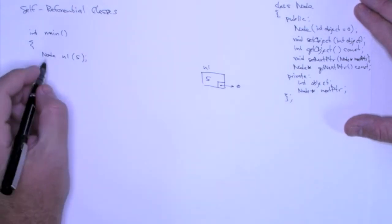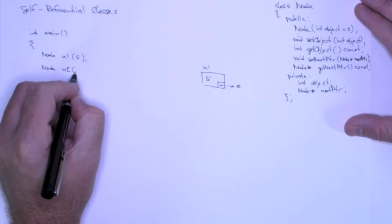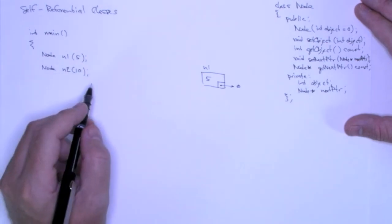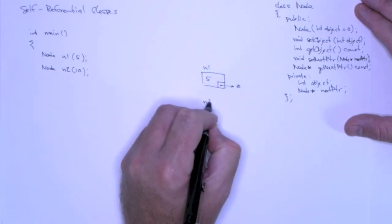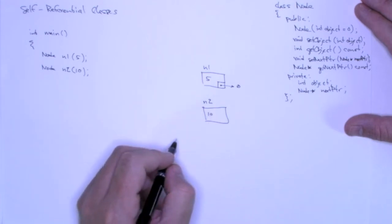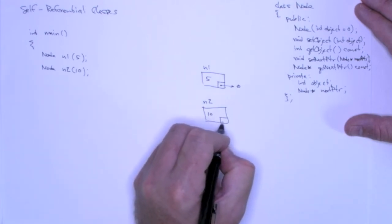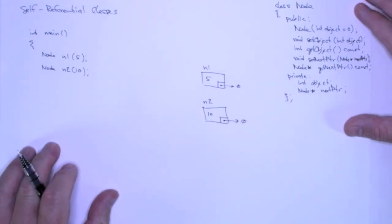I can do the same thing for n2. And this time, just to differentiate, I'm going to pass 10 in. So again, out in memory, we get an object called n2. Its object has the value 10 and its next pointer points to null.